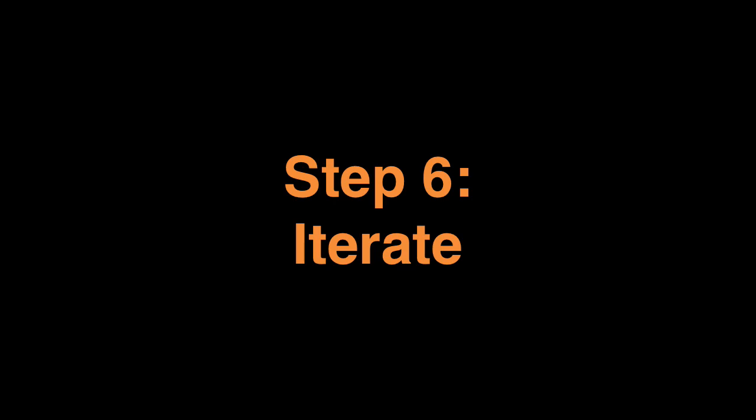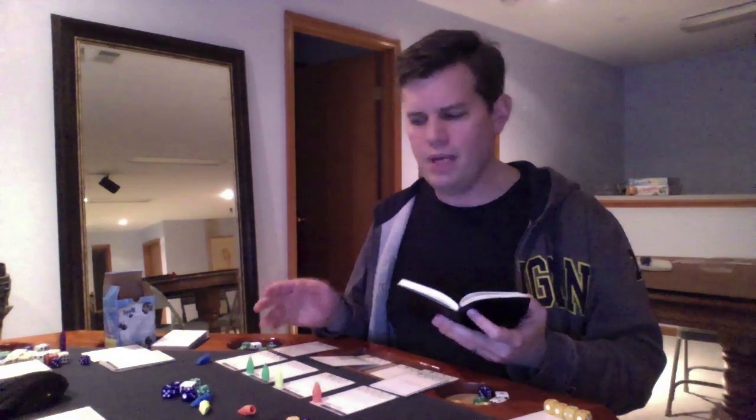Step six: iterate. After reviewing your notes, you're going to have several changes that you think you might want to make to your game. Try and limit the number that you make, because if you change too many things at the same time, you aren't going to be able to tell which one of those changes made the game better or made the game worse. Whichever one or two things you choose to change, make bigger changes rather than small changes.